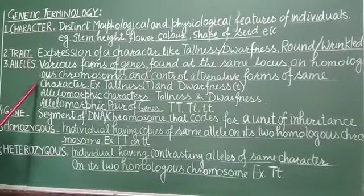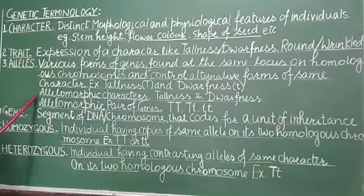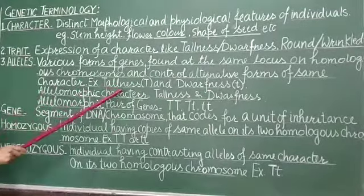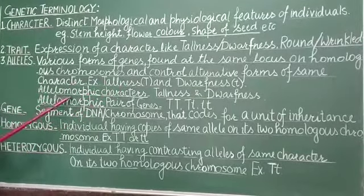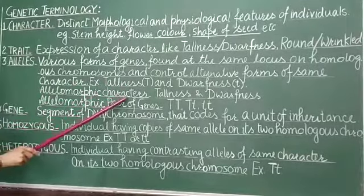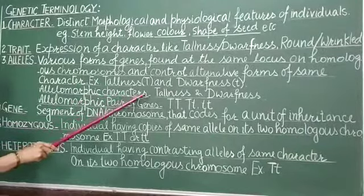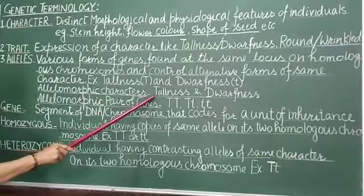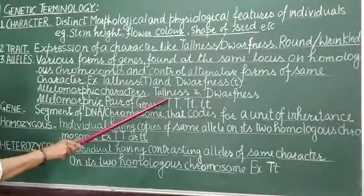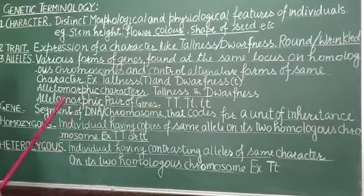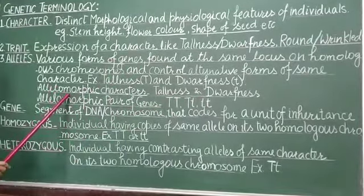In simple language we can say, alleles are the two alternative forms of genes which control the contrasting characters. Allelomorphic characters are the alternative forms of a character like tallness and dwarfness are the two alternative forms of height.